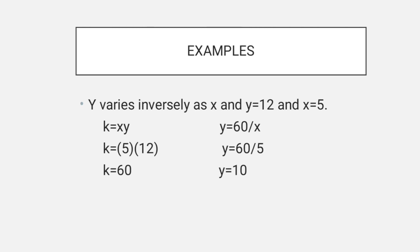Example: Y varies inversely as X, and Y is 12 when X is 5. First, find the constant: for inverse variation, K equals X times Y, so K equals 5 times 12, which is 60. Now proceed to the main problem: Y equals 60 over X. Substituting X equals 5 gives Y equals 60 over 5, which is 10.